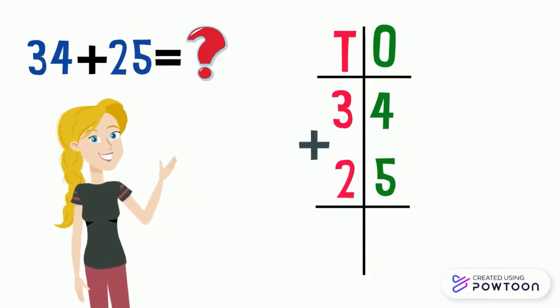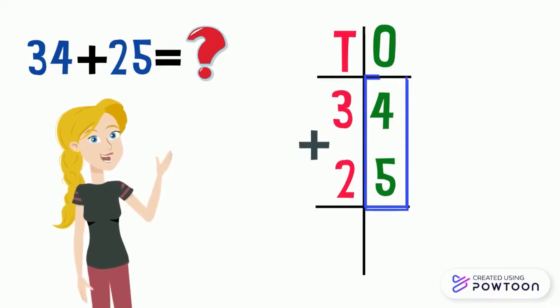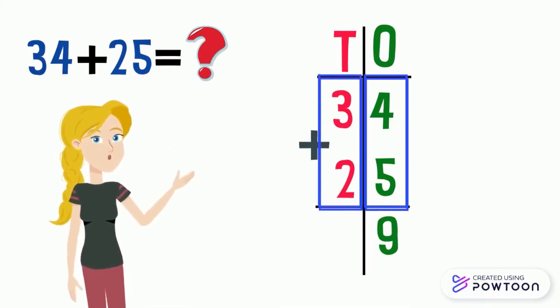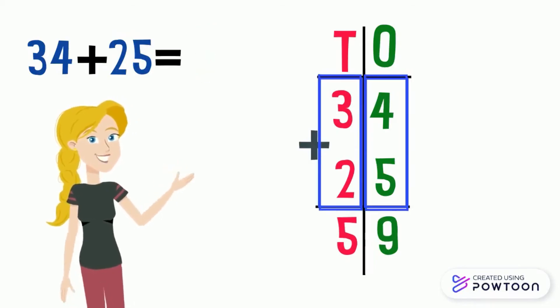After we place the numbers correctly, we can start adding them. We always start to add the numbers in the ones place column. We have 4 and 5. 4 plus 5 equals 9. Now, we will add the tens together. 3 plus 2 equals 5. So, 34 plus 25 equals 59.